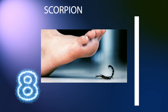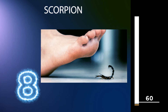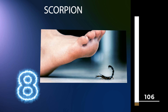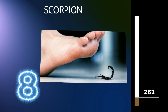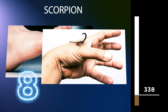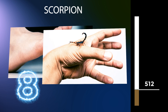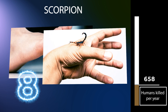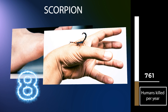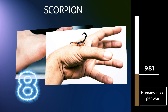Scorpions are predatory arachnids of the order Scorpiones. They have eight legs and are easily recognized by a pair of grasping pincers and a narrow, segmented tail, often carried in a characteristic forward curve over the back and always ending with a stinger. The evolutionary history of scorpions goes back 435 million years. They mainly live in deserts, but have adapted to a wide range of environmental conditions, and can be found on all continents except Antarctica.